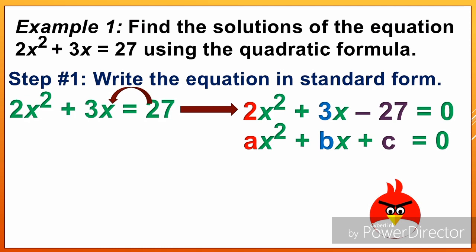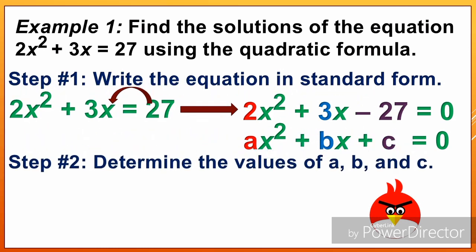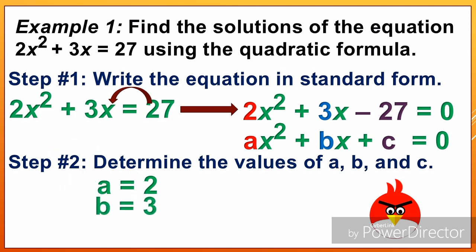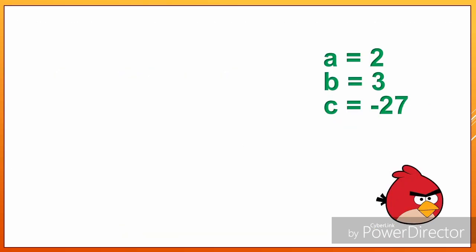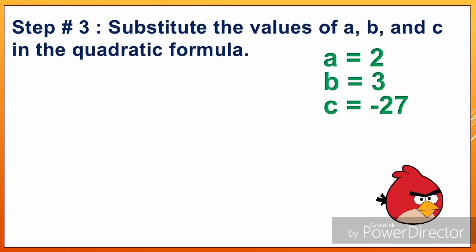We have Ax squared plus Bx plus C equals 0. Step number 2: Determine the values of A, B, and C. A is equal to 2, B is equal to 3, and C equals negative 27. We will substitute these values of A, B, and C into the quadratic formula for step number 3.